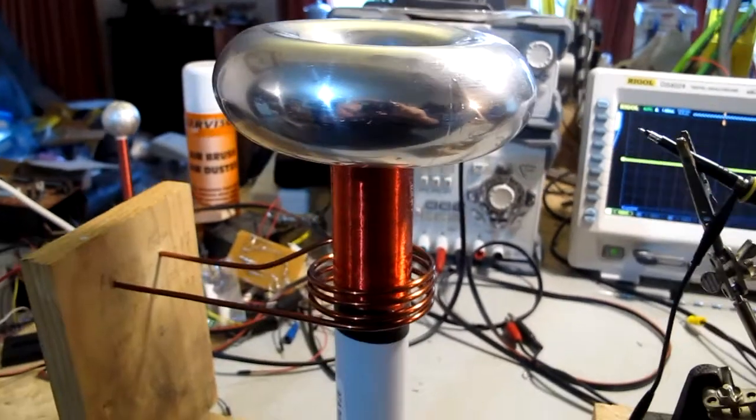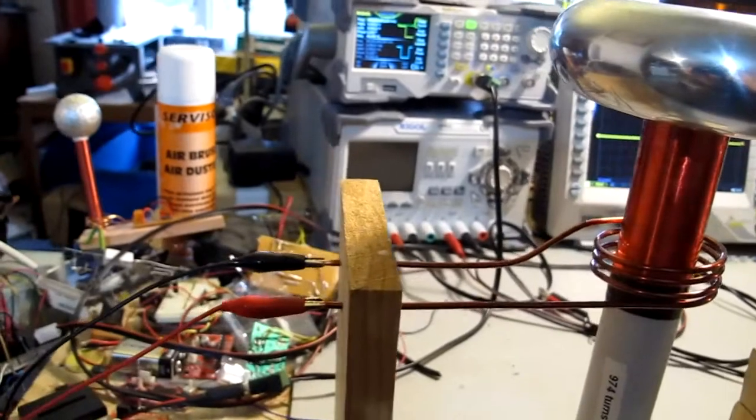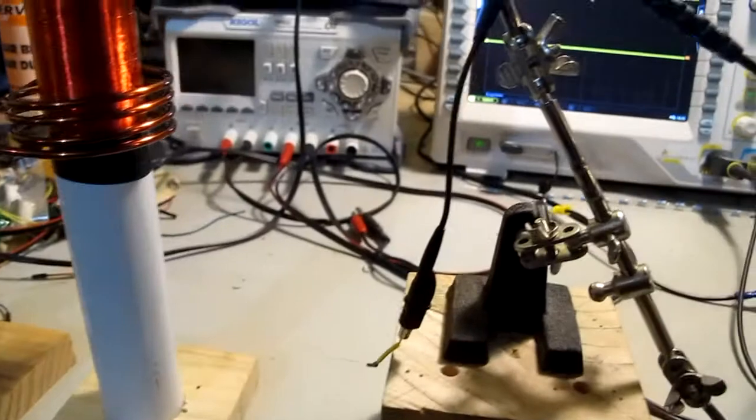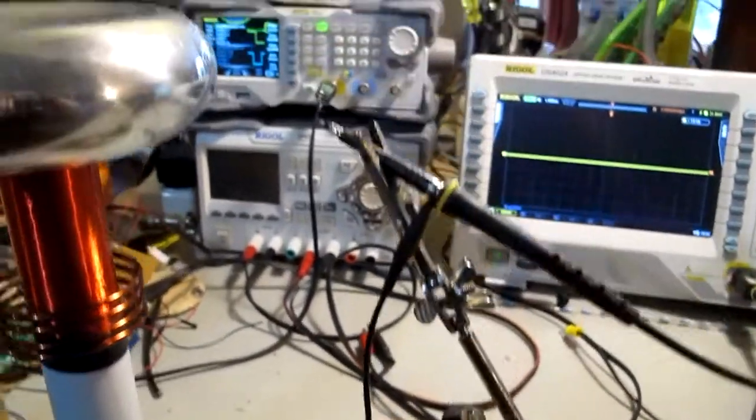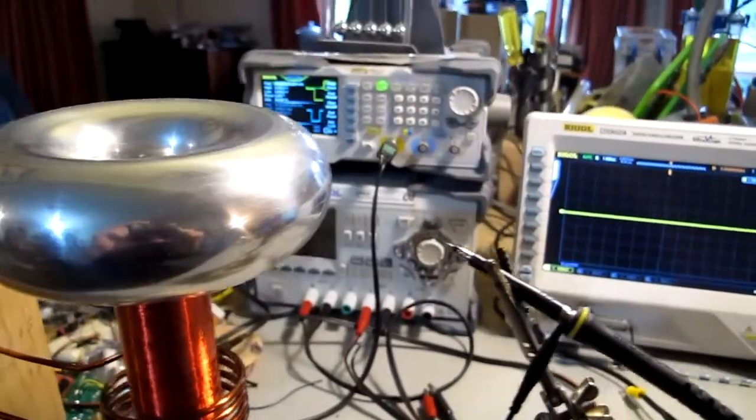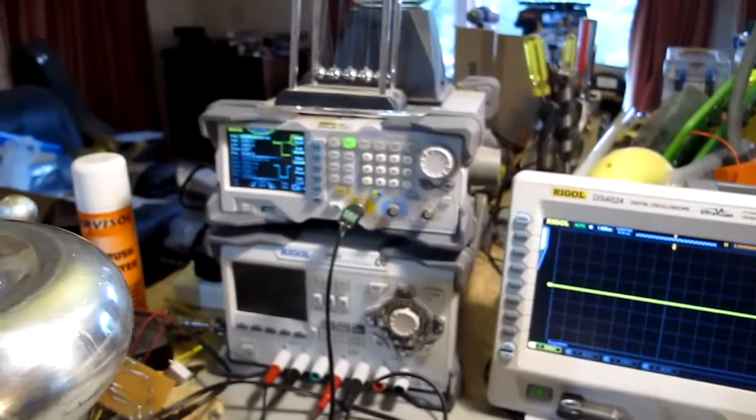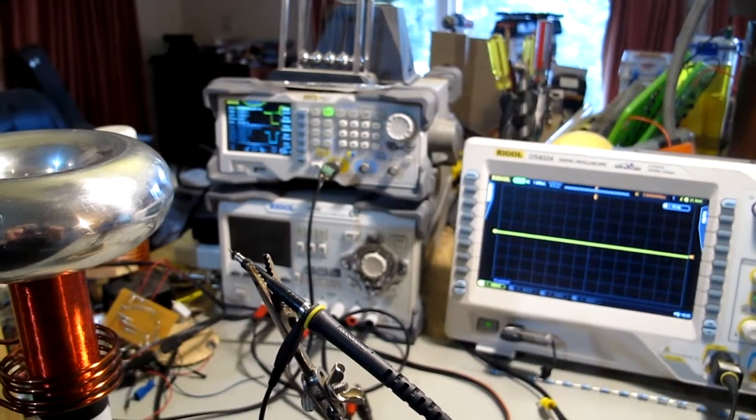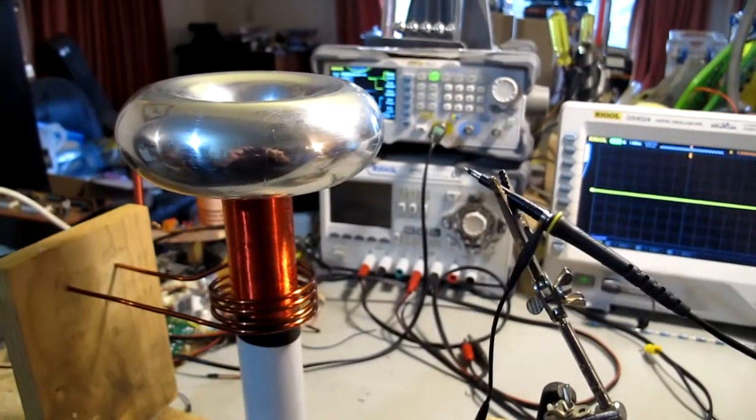Testing out with the primary now. I've just got the function generator attached straight across that. The tail of the secondary is attached to the earth on the scope probe and then the tip of that is just floating in the air.